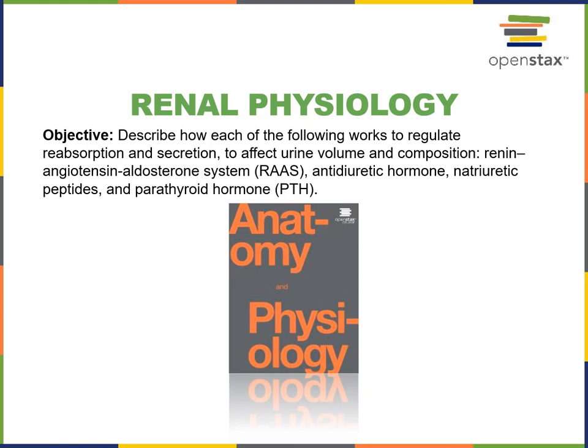In this video I will describe how each of the following works to regulate reabsorption and secretion to affect urine volume and composition: the renin-angiotensin-aldosterone system, antidiuretic hormone, natriuretic peptides, and parathyroid hormone.